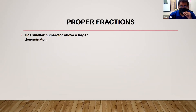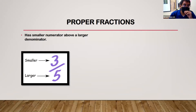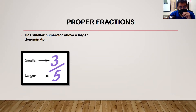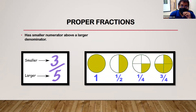Proper fractions have the smaller number above the larger number — in other words, the numerator is smaller than the denominator. As you can see in the example, three-fifths: the three is smaller than the denominator, which is five. A couple of examples are one-half, one-fourth, and three-fourths.